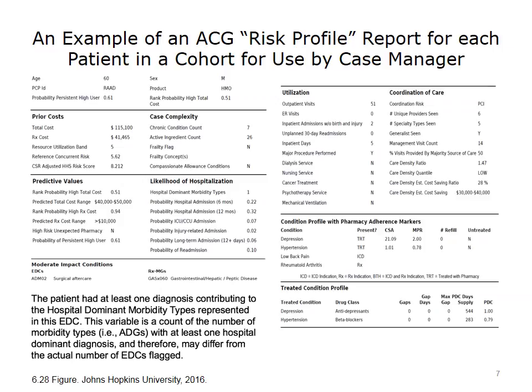The probability that this person will be a high user next year is arrayed there. In this case, the likelihood is that this person has a greater than 50% probability of being in the highest group. These and other predictions are based on his current risk factor weights, based on large benchmark populations with similar characteristics. This also arrays the various types of actual costs and current medical conditions, showing the presence or absence of different types of services and coordination markers.